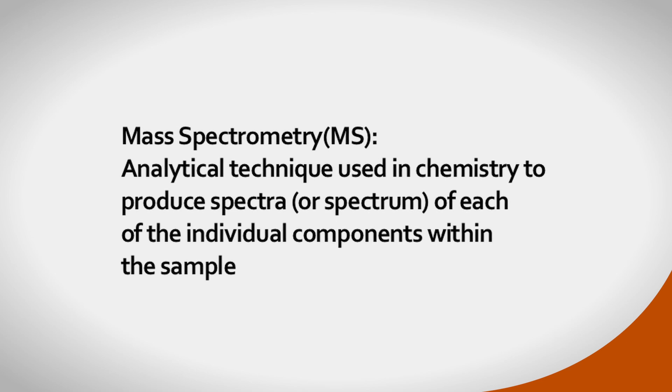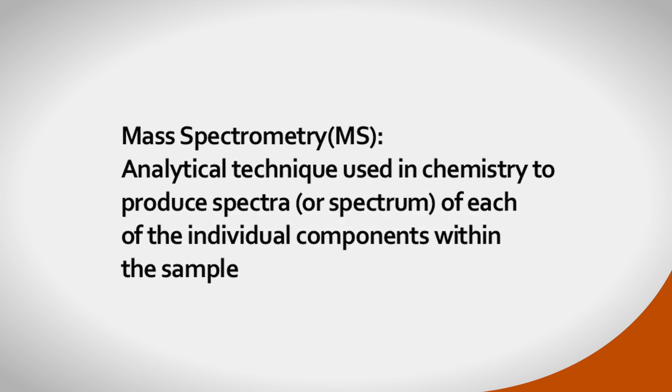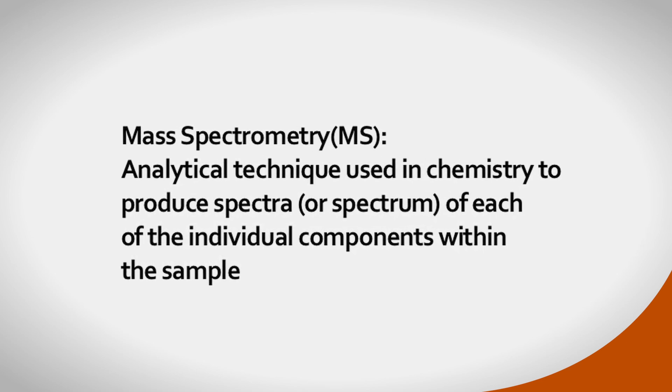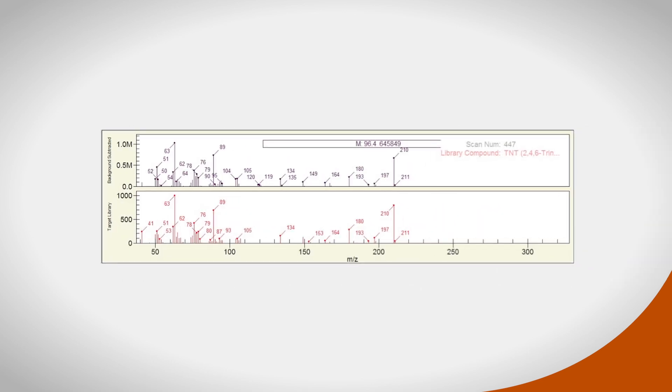Mass spectrometry, or MS, is used to produce spectra, or unique spectrum, of each of the individual components within the sample, thereby providing their chemical identity.